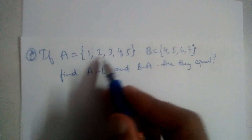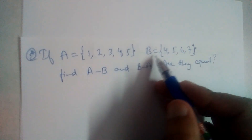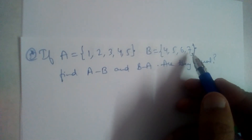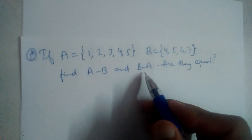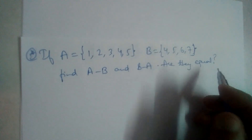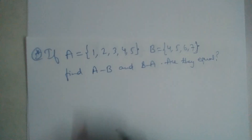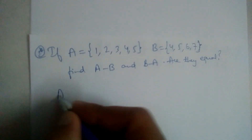If A is equal to {1, 2, 3, 4, 5} and B is equal to {4, 5, 6, 7}, find A minus B and B minus A. Are they equal or not? We should check that. So let us write A minus B first.